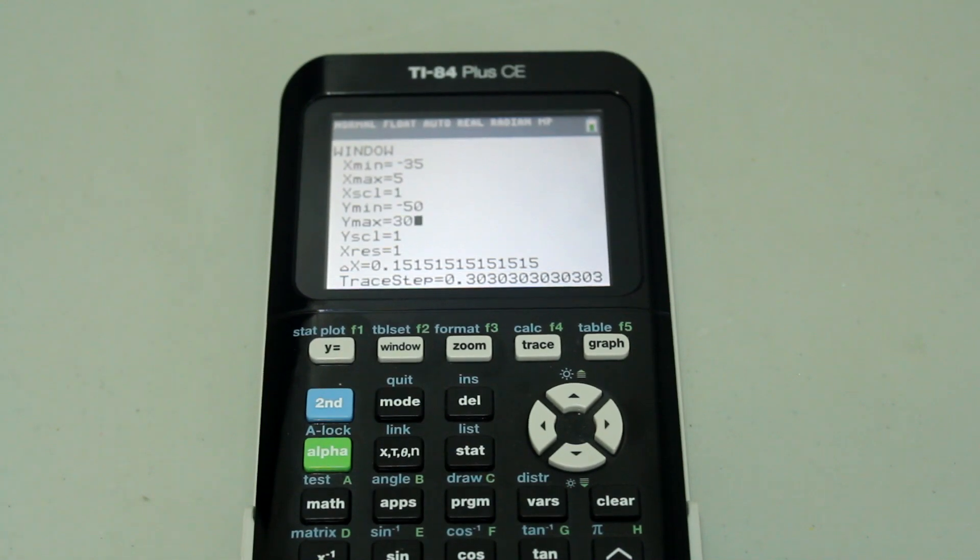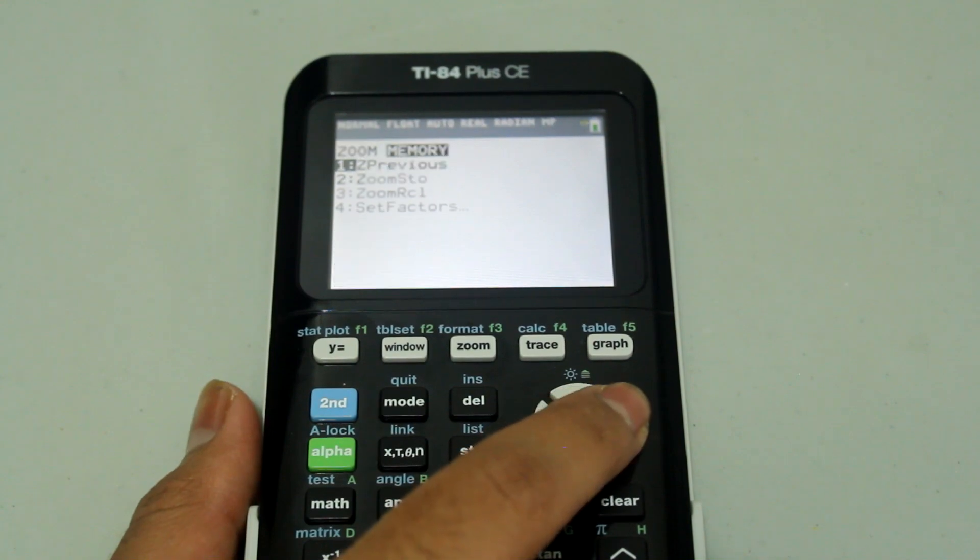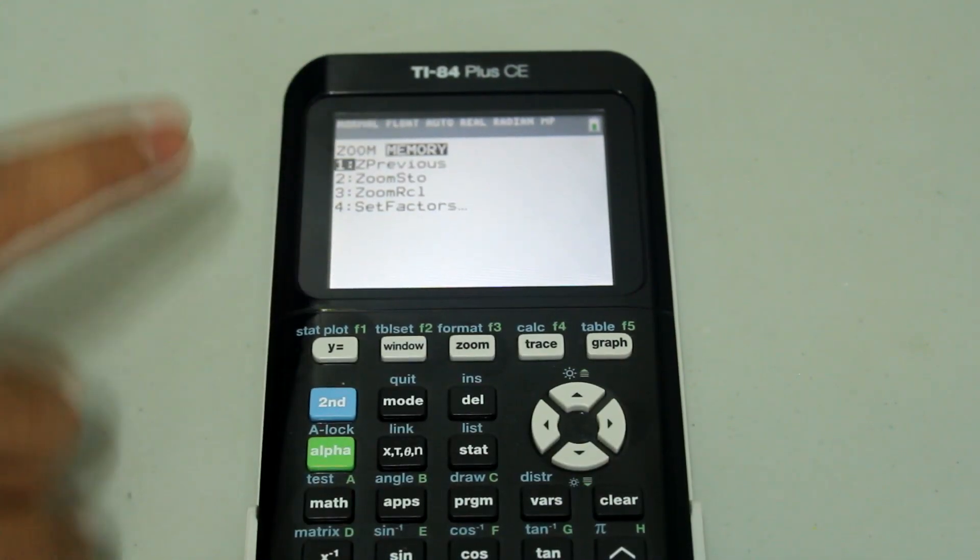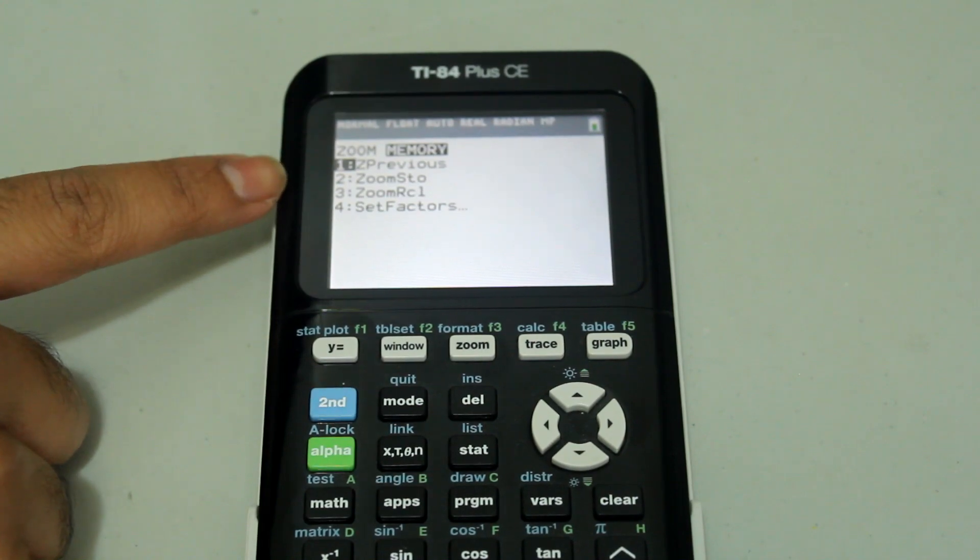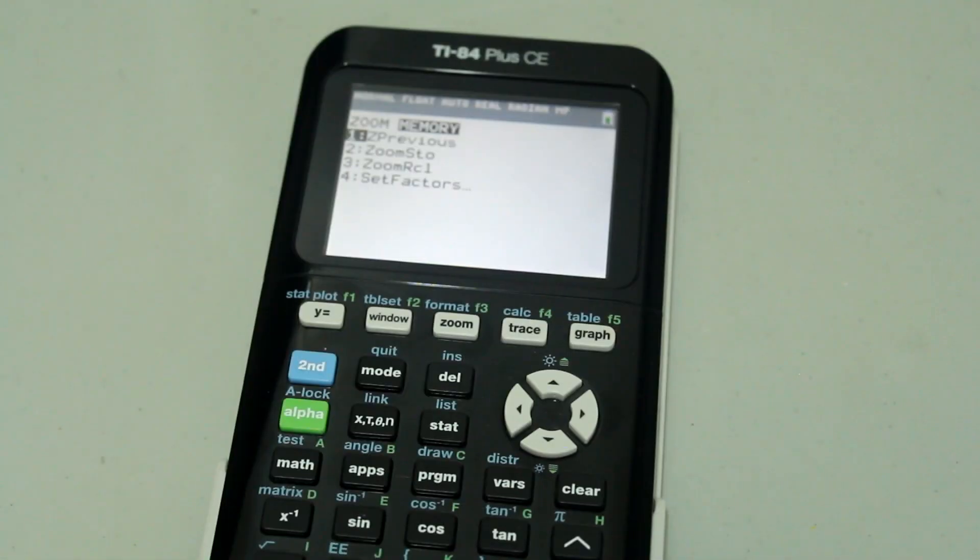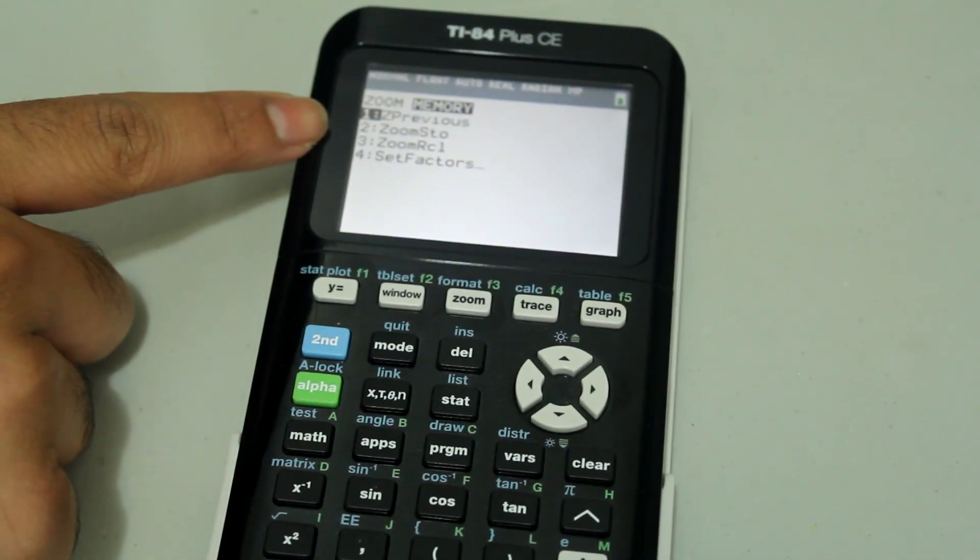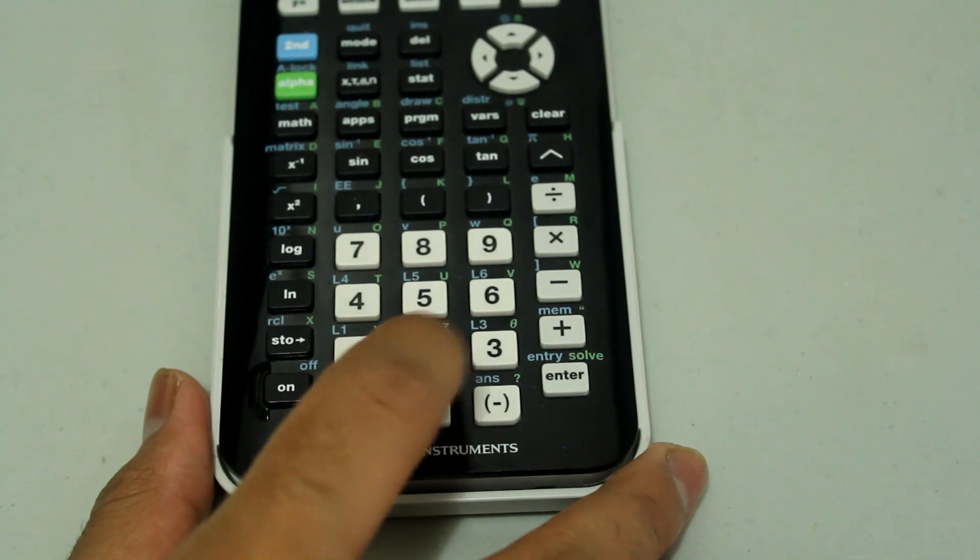In order to save this window, press the zoom button. Then right arrow to memory. And then you want to select the zoom stow option. You can either arrow down and then press enter, or since there is a number 2 next to zoom stow, you can just press number 2 on the number pad.